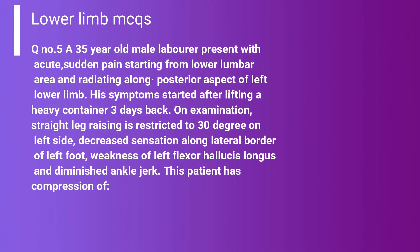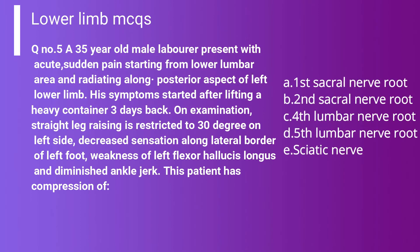Question 5: A 35-year-old male presents with acute sudden pain starting from the lower lumbar area and radiating along the posterior aspect of the left lower limb. Symptoms started after lifting a heavy container three days ago. On examination, straight leg raising is restricted to 30 degrees on the left side, with decreased sensation along the lateral border of the left foot, weakness of the left flexor hallucis longus, and diminished ankle reflex. This patient has compression of which nerve root? Option A: First sacral nerve root. Option B: Second sacral nerve root. Option C: Fourth lumbar nerve root. Option D: Fifth lumbar nerve root. Option E: Sciatic nerve.